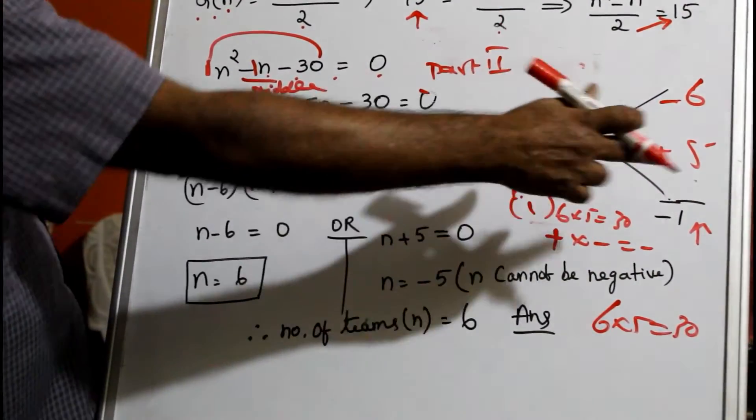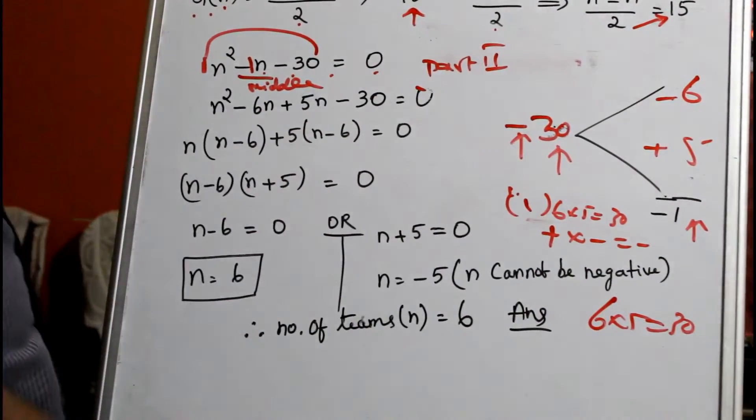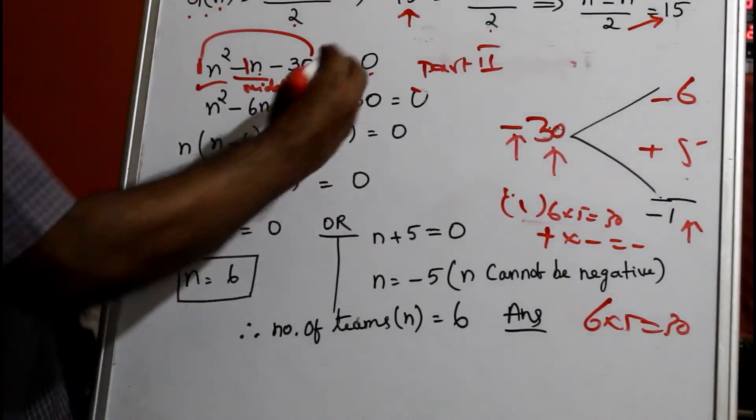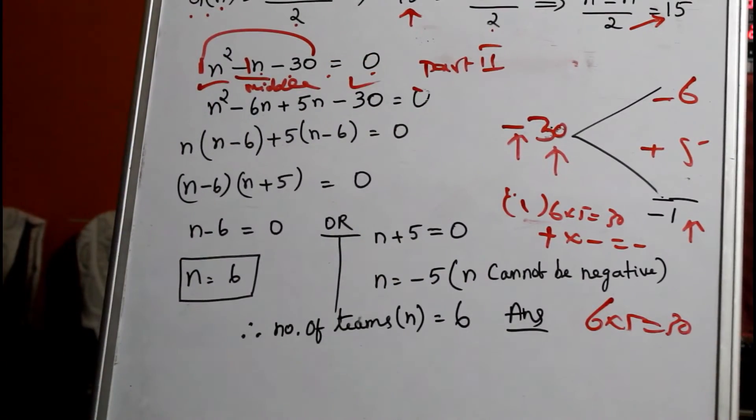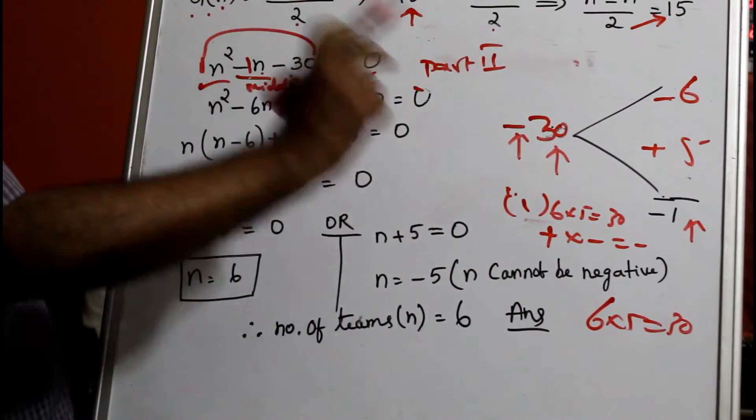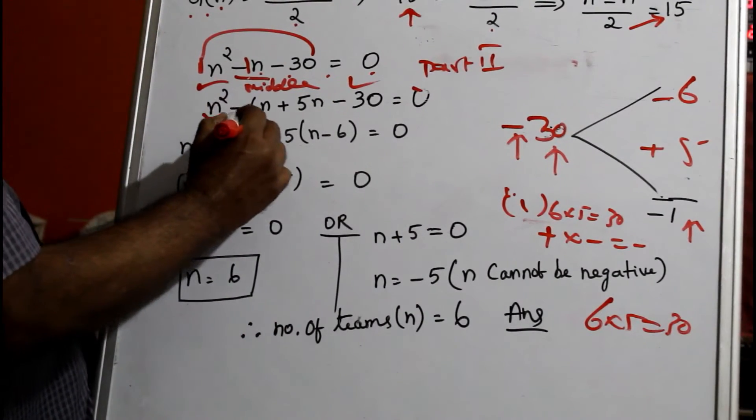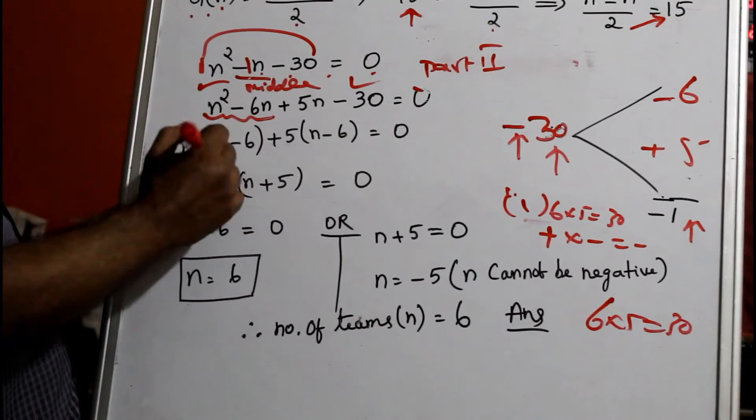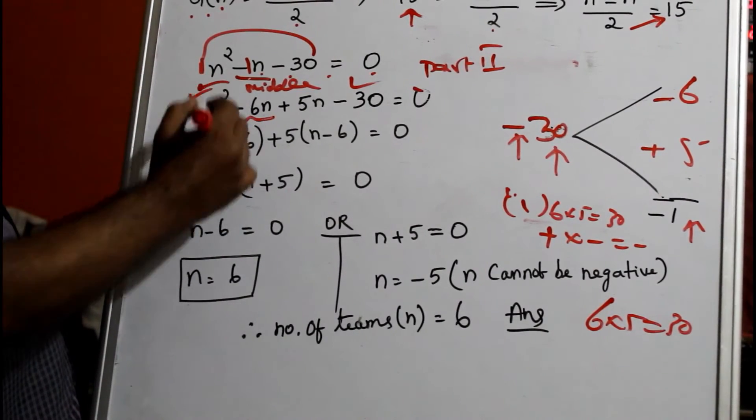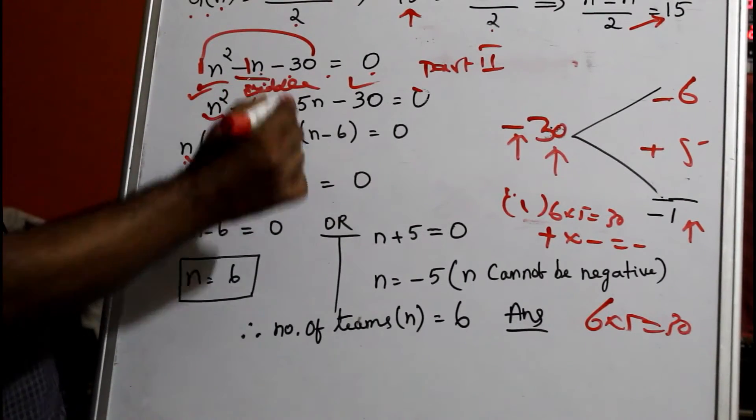Write n² as it is, write -30 as it is. The middle term you're splitting: -6n + 5n. Then group these two terms. n is common: when you take out n, you get n(n - 6).